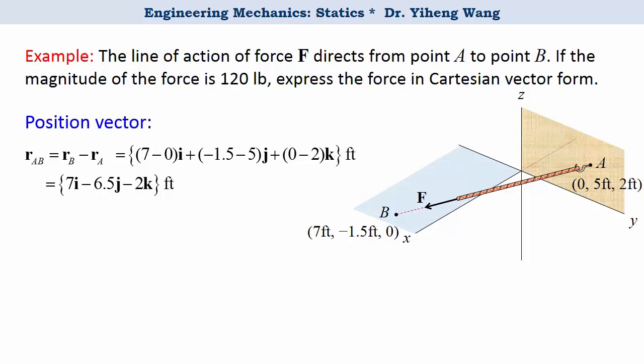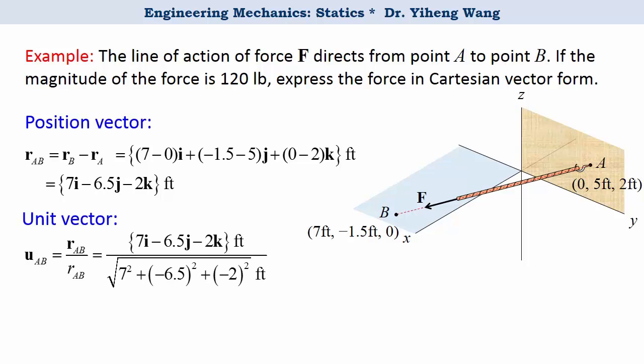From here we can calculate its unit vector UAB, which equals to RAB divided by its magnitude. Notice how the unit of foot gets cancelled out.